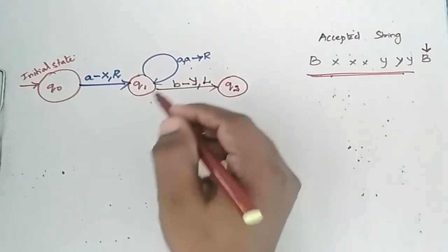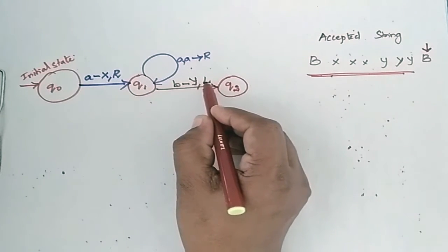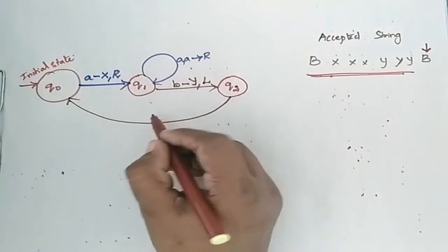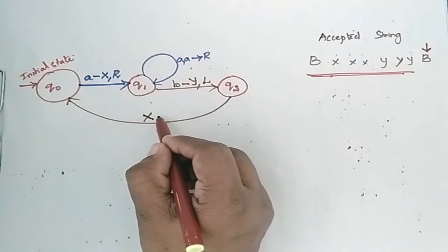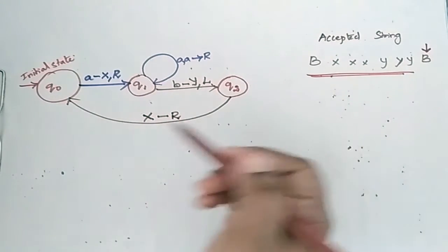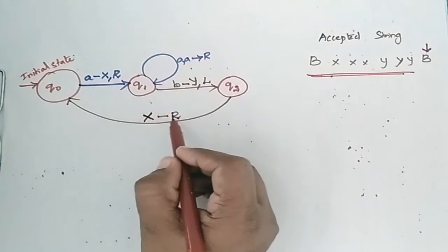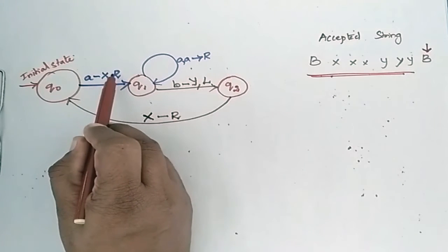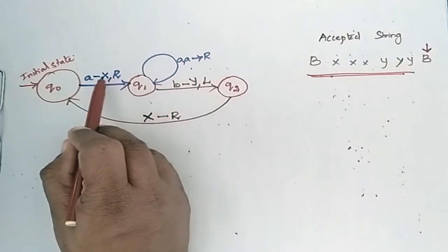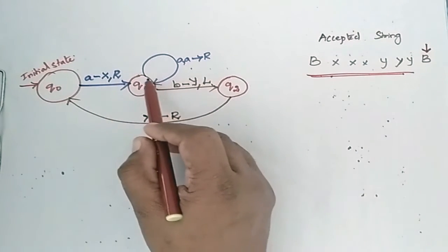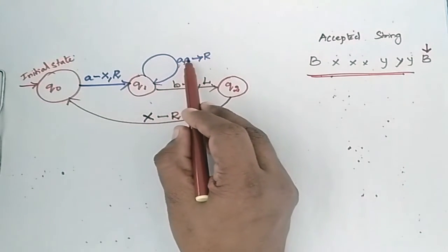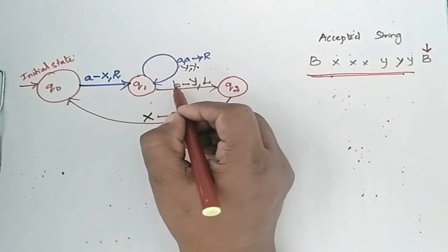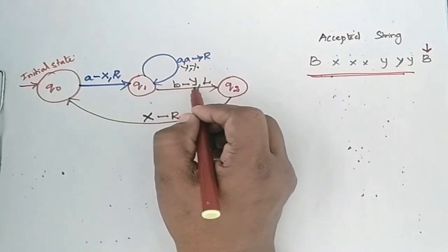In state q2, when 'b' has been replaced by 'y', the machine moves left. While moving left, it may encounter y's and a's. It keeps moving left until it encounters 'x'. When it encounters 'x', it moves right. Moving right, it may encounter 'a' — that 'a' is again changed to 'x' and the machine moves right again. It may then encounter more a's and y's, and when it encounters 'b', that 'b' is changed to 'y' and it moves left again.